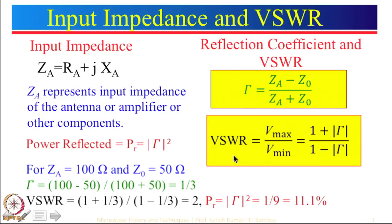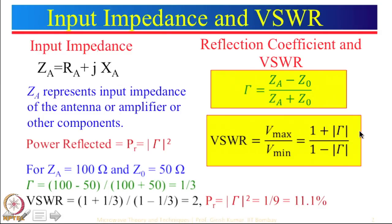Let us also define another quantity which is VSWR — it stands for Voltage Standing Wave Ratio. This is defined as Vmax divided by Vmin and the expression for VSWR is given by this equation. You can see that this takes the magnitude of the reflection coefficient. Reflection coefficient is a complex number of course — I took the example of Za equal to 100 ohm hence it was real — but Za in many cases will be a complex number, so the reflection coefficient will also be a complex number. However, here we take the magnitude of the reflection coefficient.